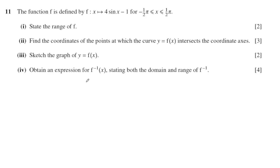The question is about the function f defined by f(x) = 4sin(x) - 1 for interval x. The first part asks to state the range of f. You know about the function of trigonometry, the interval is always from minus 1 to 1.